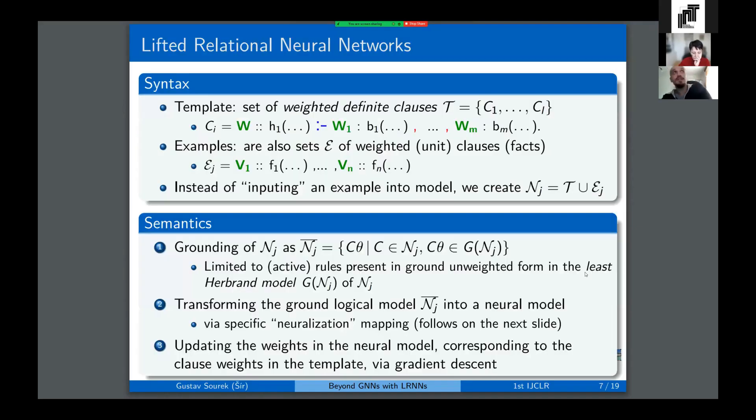So with that, we introduced in 2015 this lifted relational neural networks framework, where syntactically, this is somewhat similar to Markov logic networks. The templates also take the form of weighted sets of weighted definite clauses. These are commonly represented in the form of rules in the context of logic programming, which we follow also quite closely. And then similar to the spirit of ILP, the learning examples themselves are also represented in weighted logic, typically sets of weighted facts as shown here. And then instead of inputting an example into model as common in deep learning, we simply merge these two logical representations together and then interpret the result as a neural network.